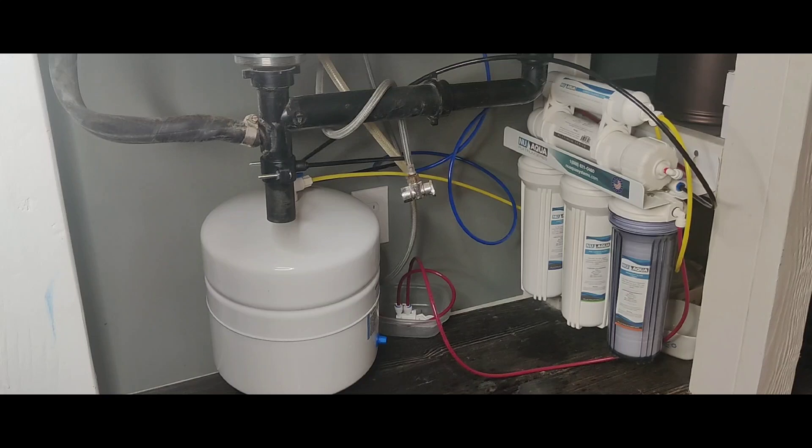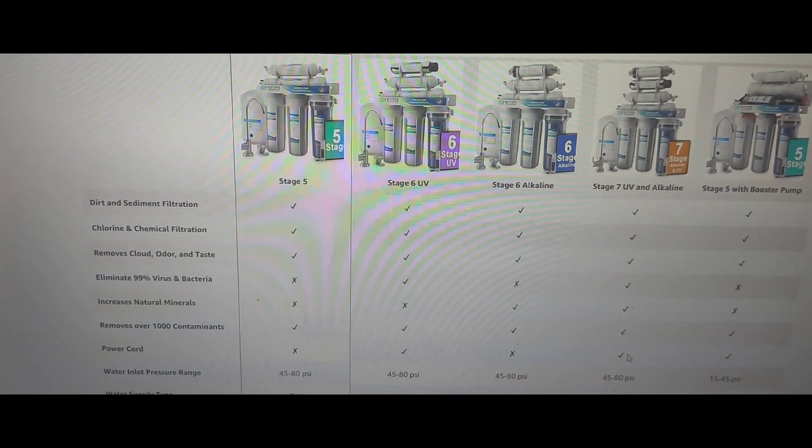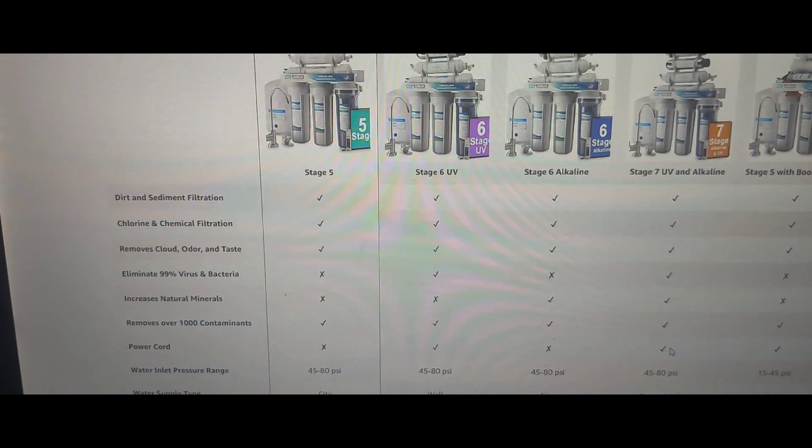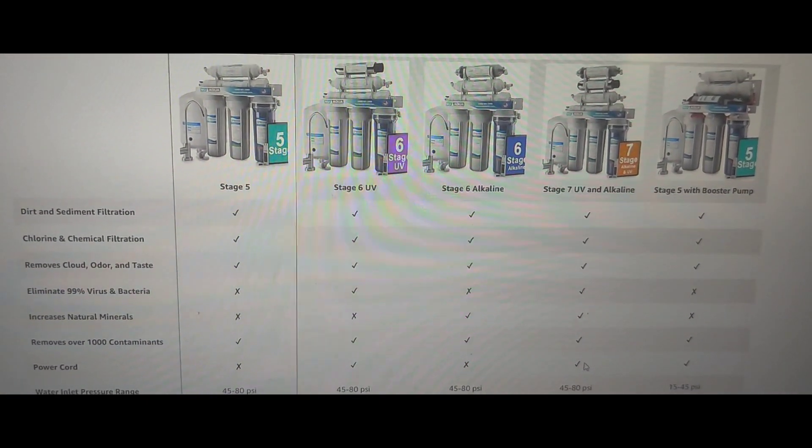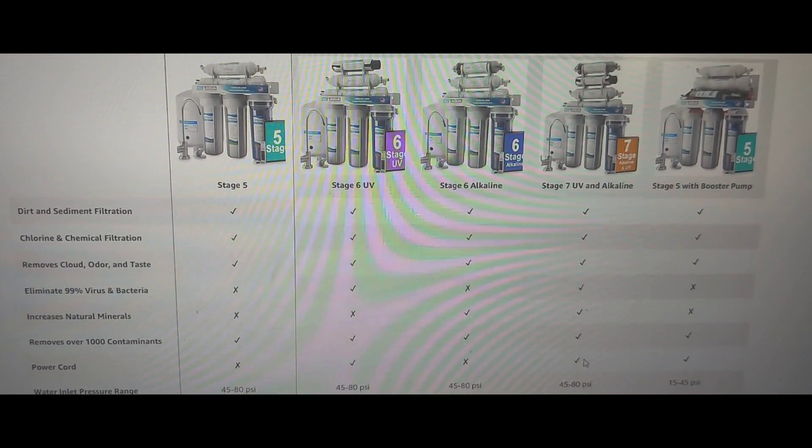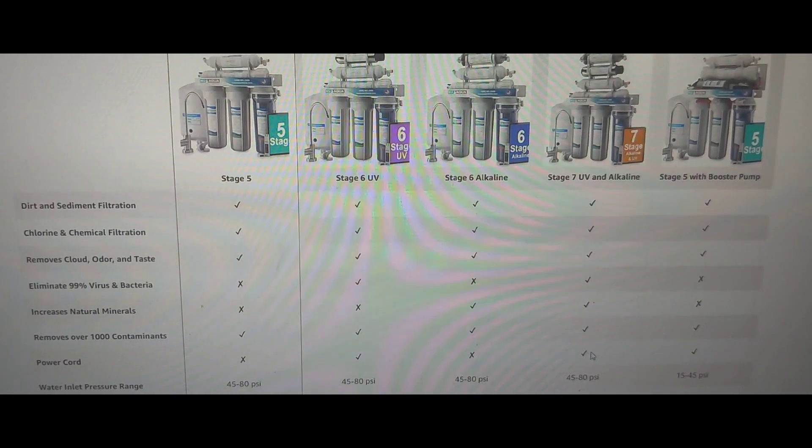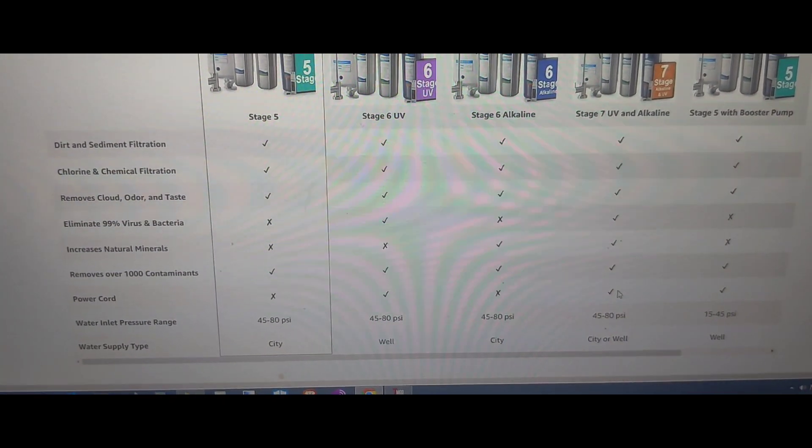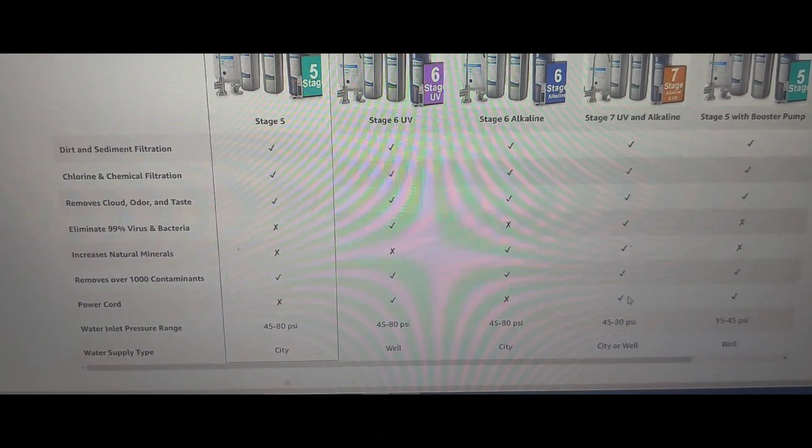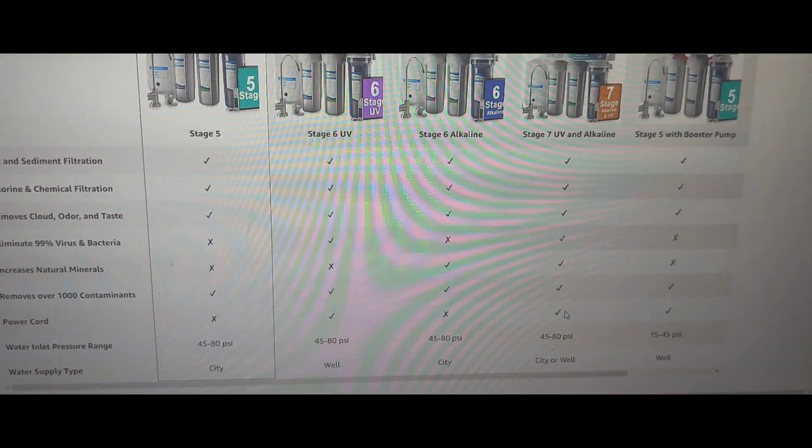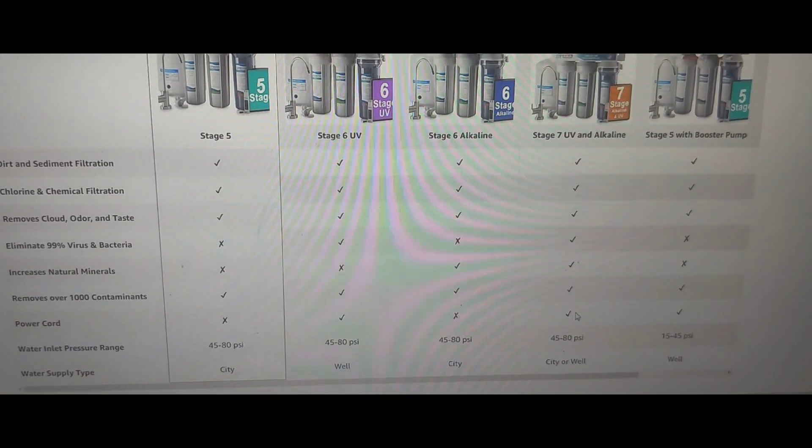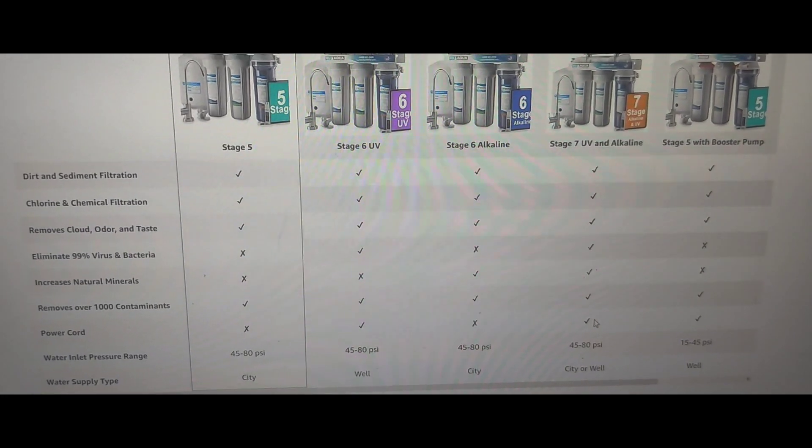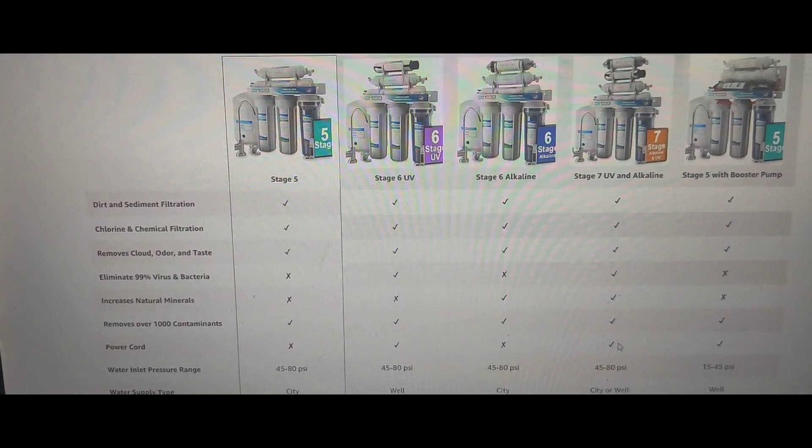It's just kind of a generic overview of what you need to do because there's several different systems. So, if you look right here, the Stage 5 is the one that they sent me. So, you've got 5, 6, 6 alkaline, 7 with a UV light and the alkaline filter setup and a Stage 5 with a booster pump. And the only kit that does everything, including eliminating 99% of viruses and bacteria, is the Stage 7 UV and alkaline kit. Which I didn't get. They sent me the Bare Bones setup right here.